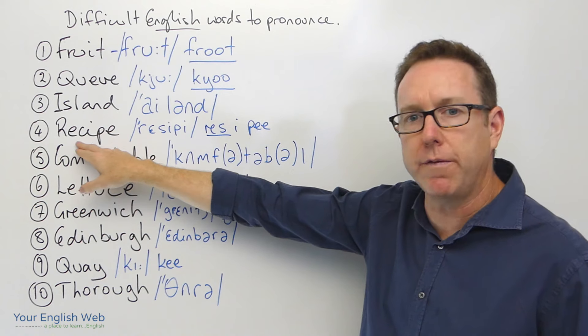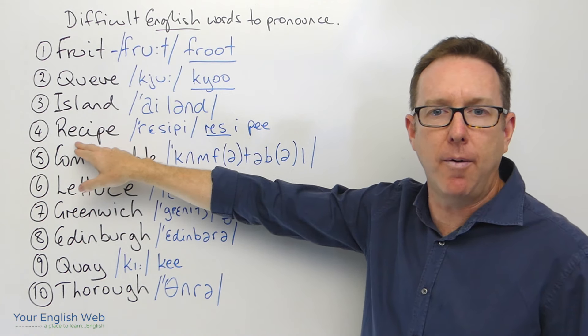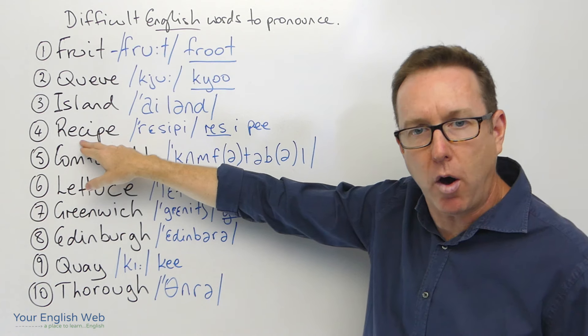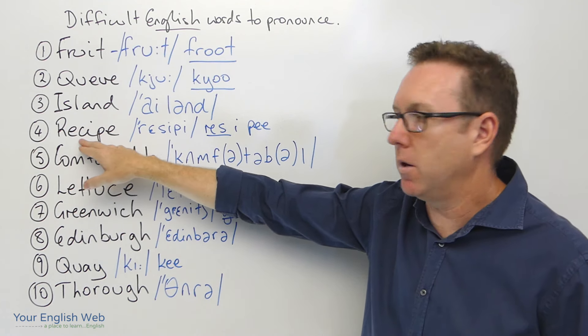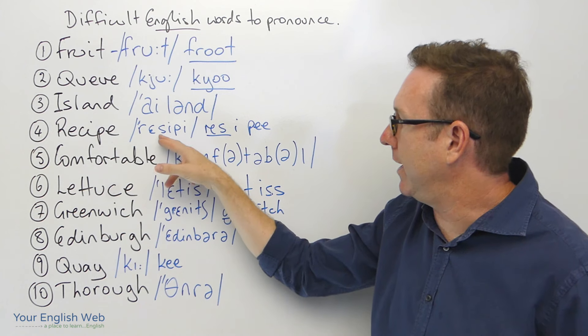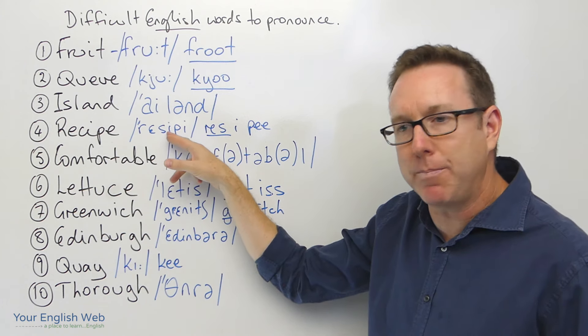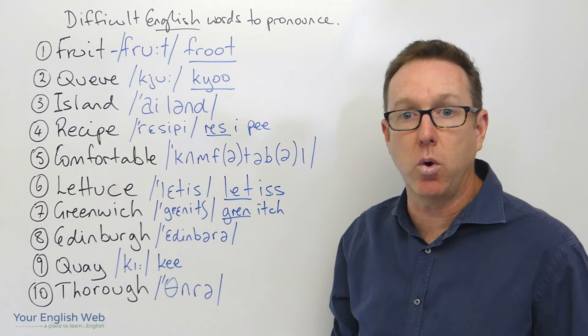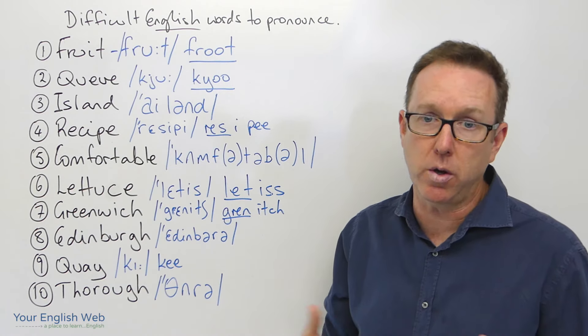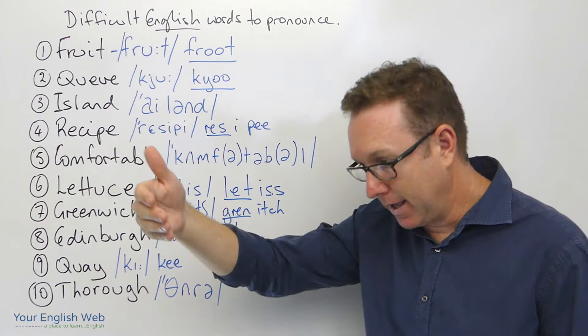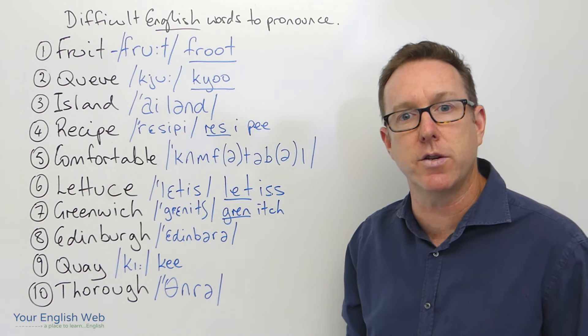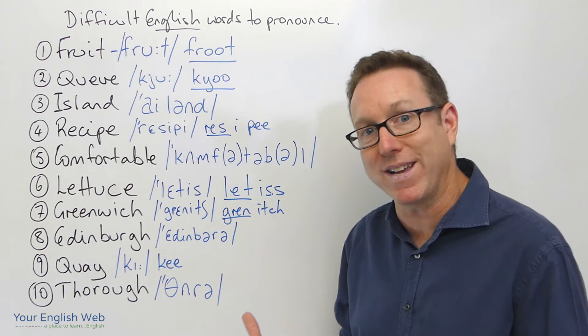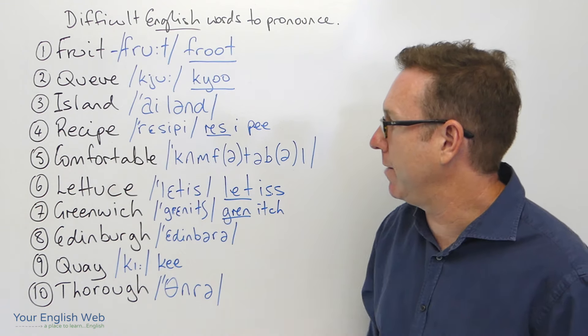The next one here also very commonly mispronounced quite often. The word is recipe, recipe. We can see it here: recipe, recipe, recipe. A recipe, of course, if you like to cook you'll know what a recipe is. It's the list of ingredients and directions that you need or instructions in order to cook that meal. Recipe.